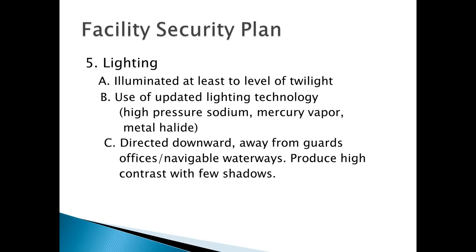Let's talk about security levels. Level one is the degree of security precautions taken when the threat of an unlawful act against a vessel or terminal is thought possible but not likely. This is what most organizations operate at on a daily basis. Level two security is when you have intelligence indicating that terrorists are likely to be active within your area, or they are known to be attacking this type of facility or terminal.